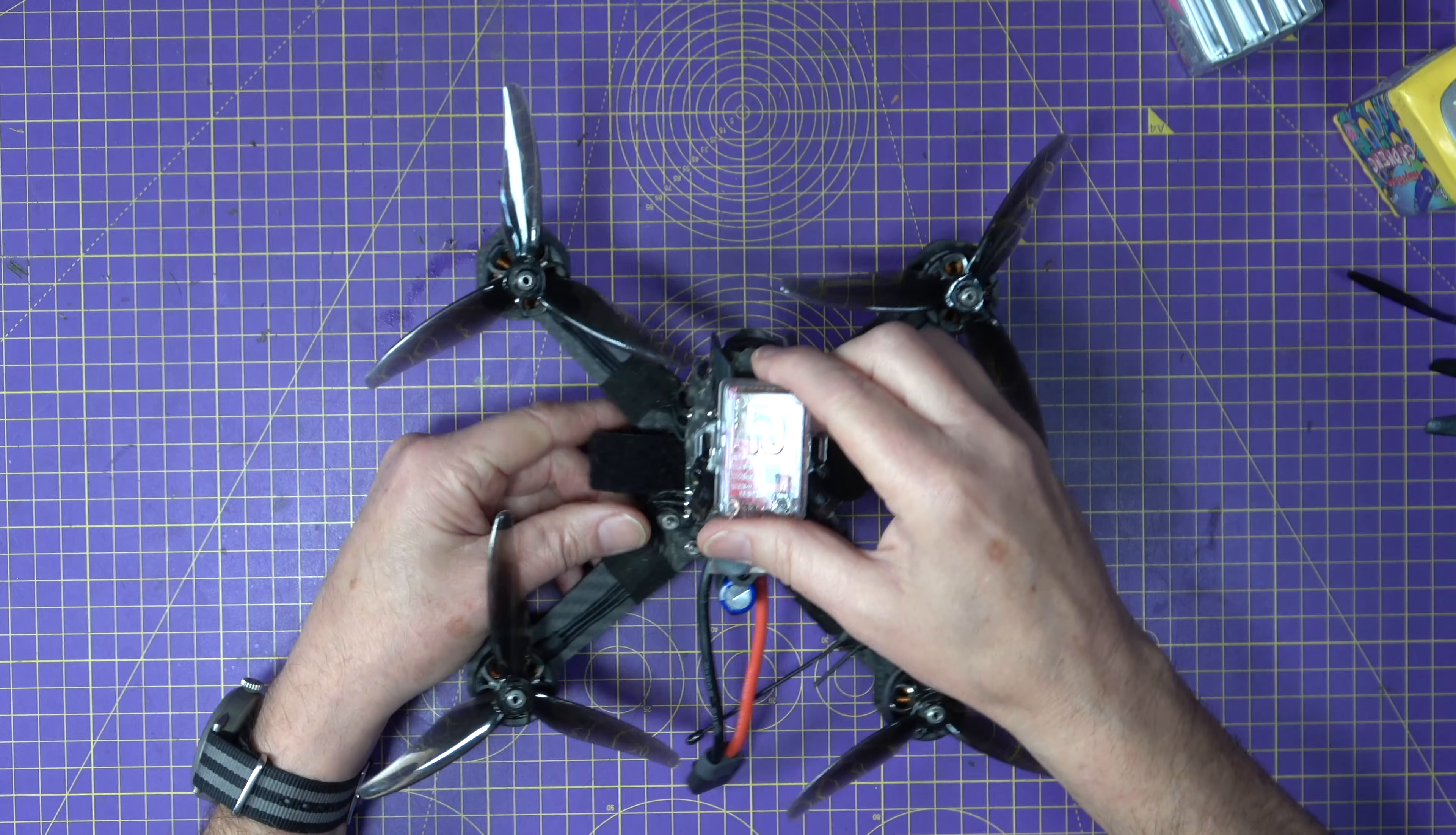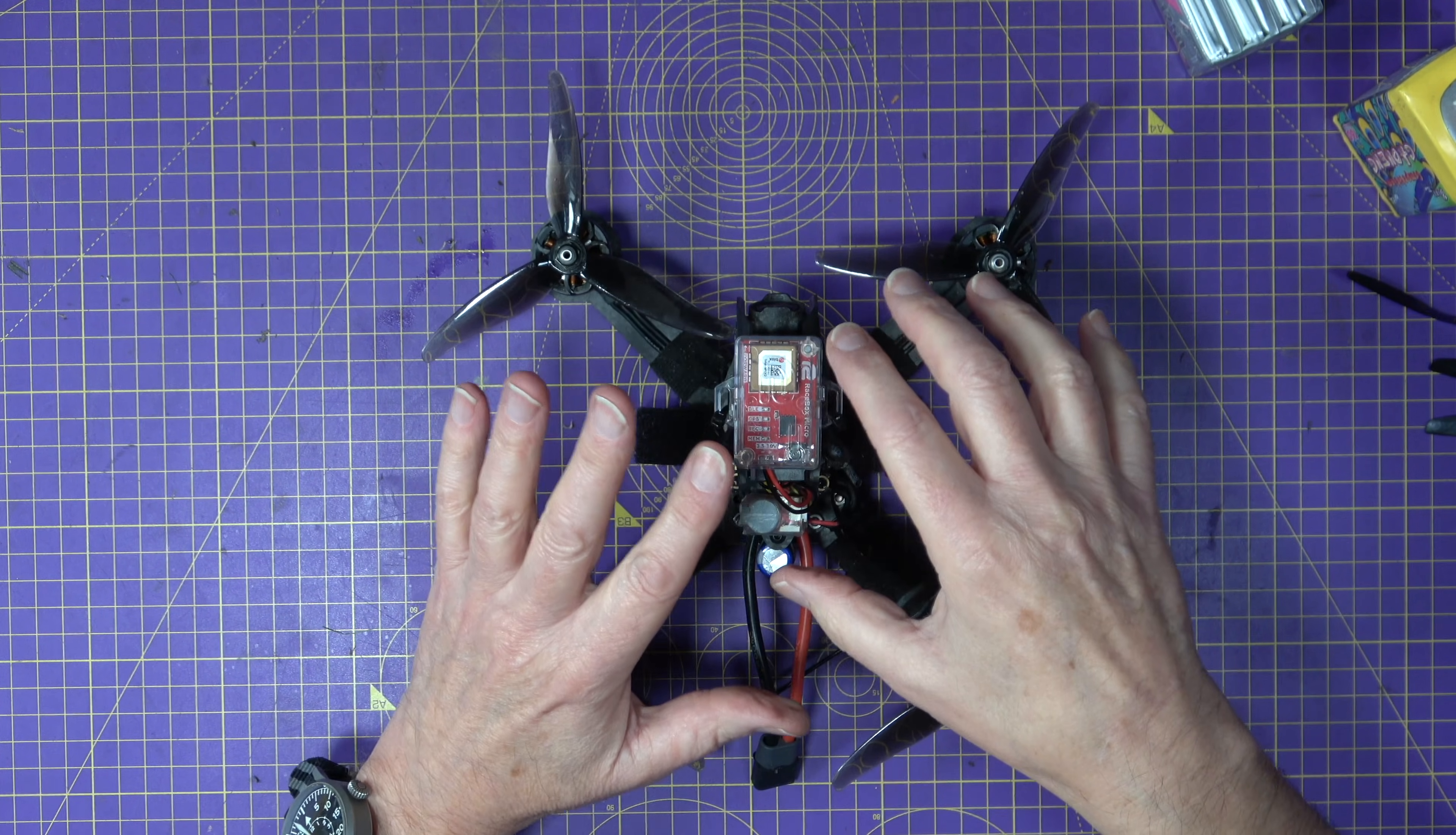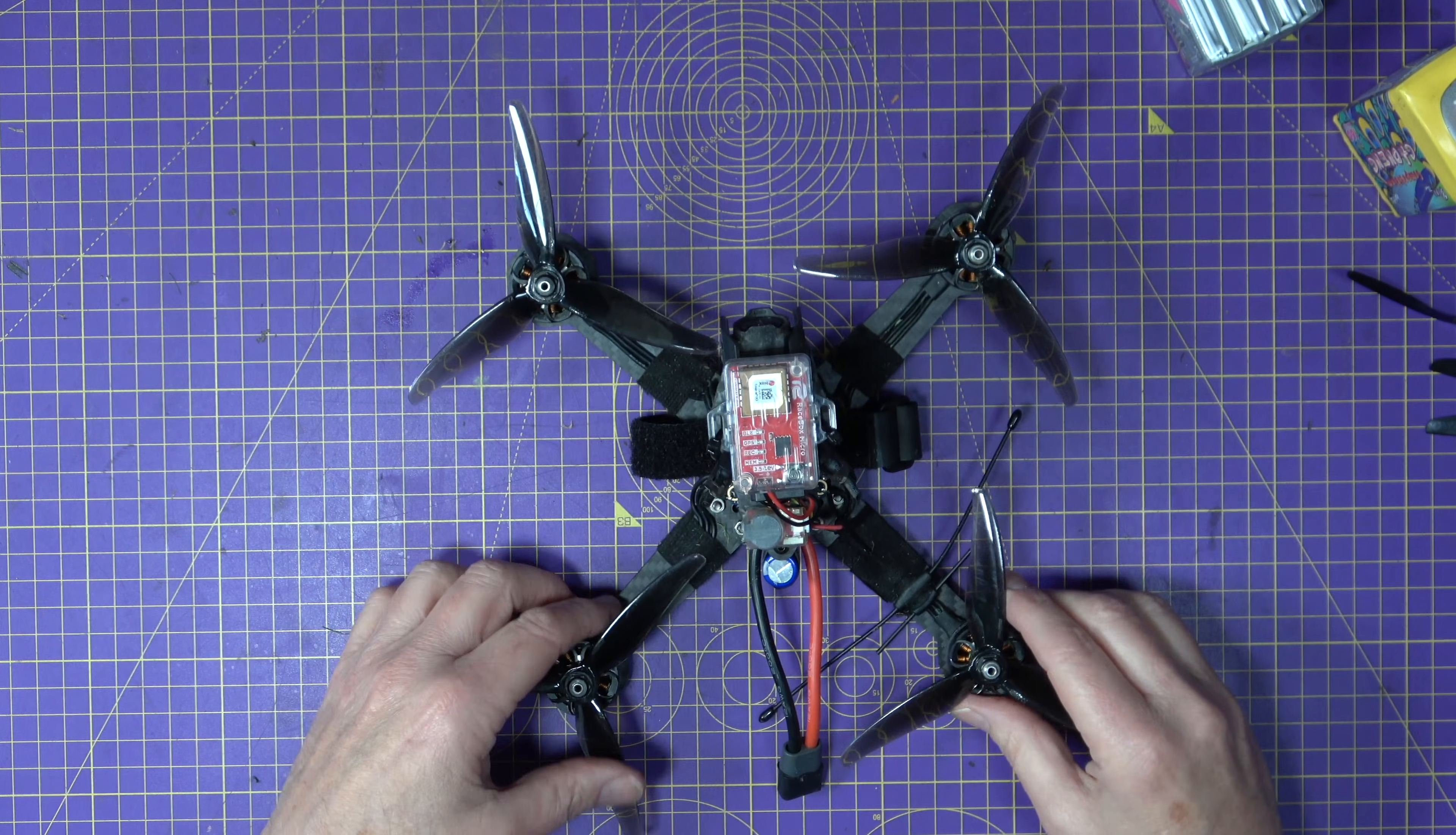On the top this is my Racebox Micro. It's a standalone GPS data logger that I normally use on my RC cars. It logs at 25 hertz and it's got a dedicated drag mode which is perfect and it lets me export all that data straight into a spreadsheet so I can analyze it later.